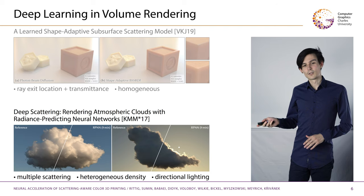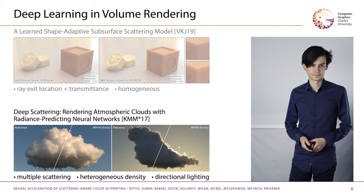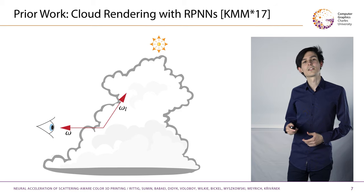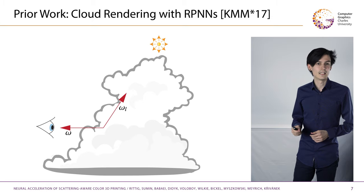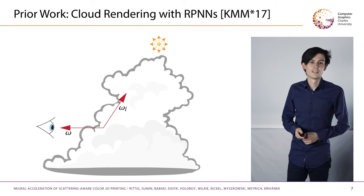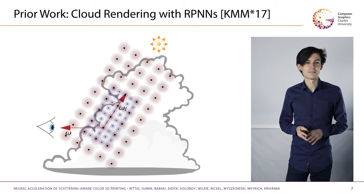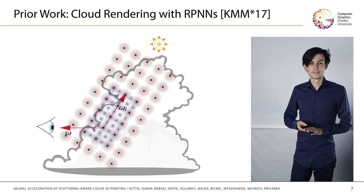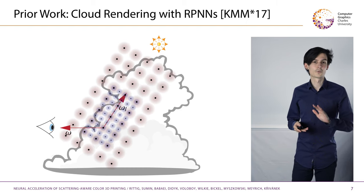Let me explain this related work in more detail so you understand how these radiance-predicting neural networks are used. Once a ray hits the cloud, the first scattering event is sampled. From there, a single scattering ray is connected to the sun, and any multiple scattering is predicted by the network itself. For that, a descriptor of the local medium configuration — also called a stencil — is sampled around that point on multiple scales. The authors implicitly encode the light direction to the network by rotating the stencil towards the sun.